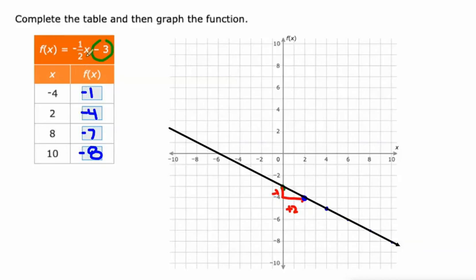10 is negative 8. 1 half of 10 is 5. But it's negative 5. Negative 5 minus 3 is negative 8. And you'll also see in the table, this increase of 6 and this decrease of 3.